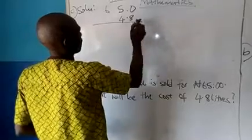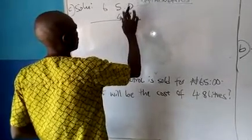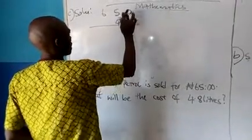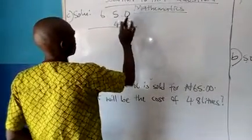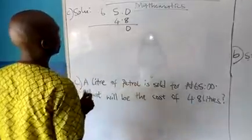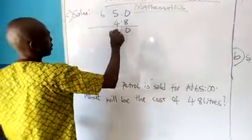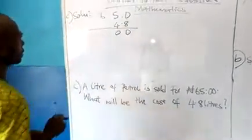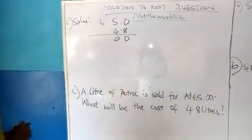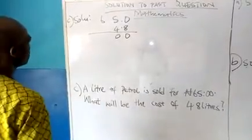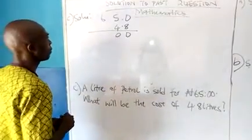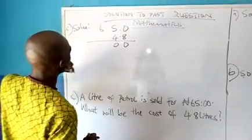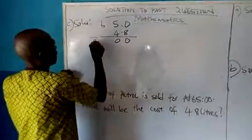Which means we say 65.0 multiplied by 4.8. 8 times 0. 8 times 5. 8 times 40. We write 0, carry 4. 6 times 8 is 48, plus 4, that will give us 48 plus 4 will give us 52. Write 52.